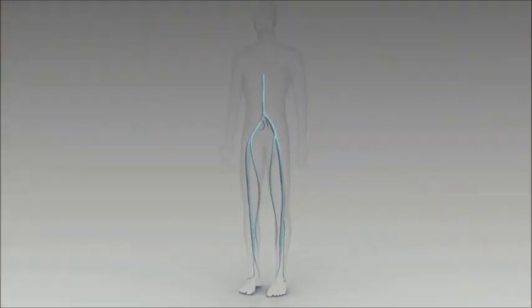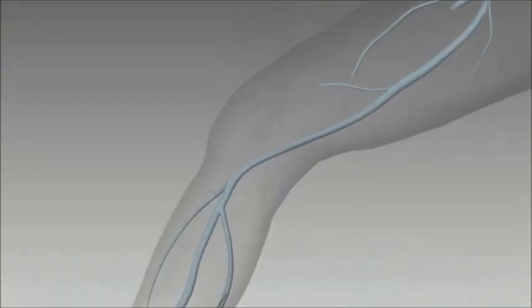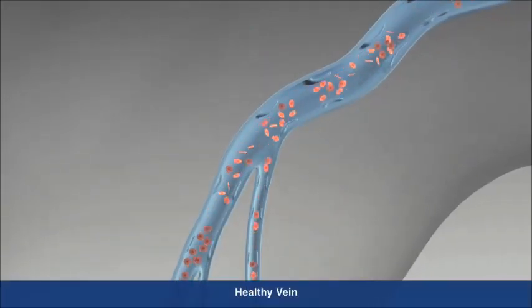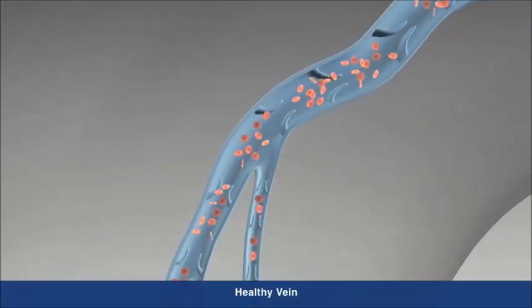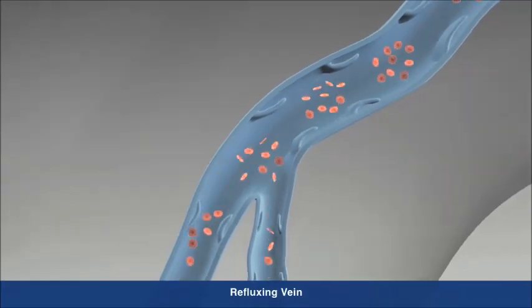CVI is a progressive medical condition where the valves that carry blood to the heart and the calf muscle no longer function effectively, causing blood to accumulate in the legs and the veins to swell.